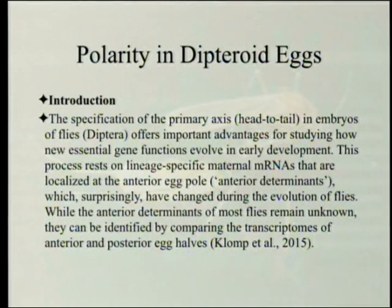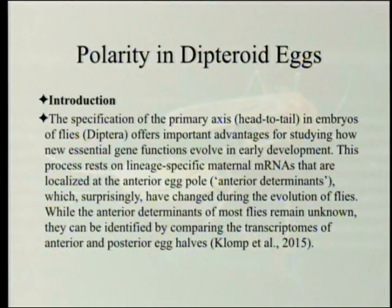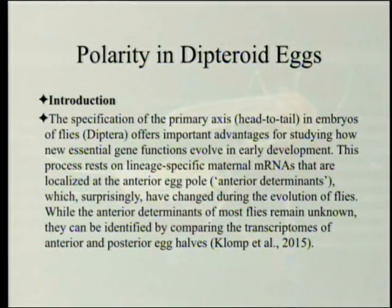The introduction states: the specification of the primary axis — head on one end, tail on the other — in embryos of flies (Diptera) offers important advantages for studying how new essential gene functions evolve in early development. This process rests on lineage-specific maternal RNAs localized at the anterior egg pole, which surprisingly have changed during the evolution of flies. That's not supposed to happen in standard evolution.